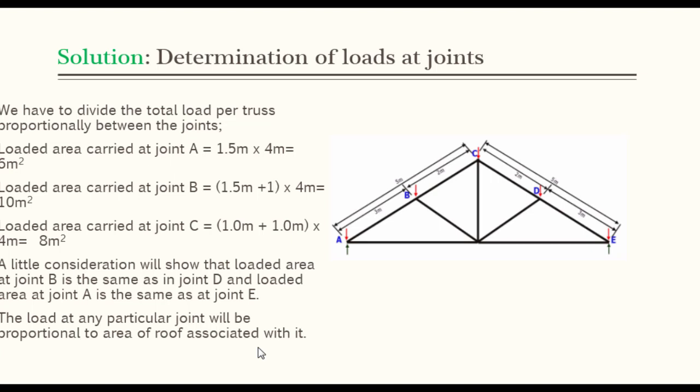For instance, loaded area carried at joint A is equal to 1.5 meters times 4 meters, which is equal to 6 meters squared. The 1.5 meters is the length of the member AB divided by 2. Similarly, loaded area carried at joint B is equal to 1.5 meters plus 1 meter times 4 meters, which gives us 10 meters squared. Similarly, loaded area at joint C is equal to 1.0 meters plus 1.0 meters times 4 meters, which gives us 8 meters squared.